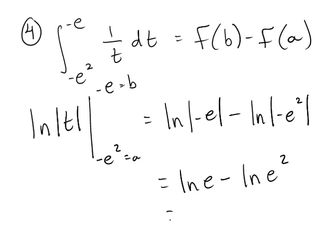But the ln of e is 1. And this, the power rule brings that 2 in front, so that's going to be 2 times the ln of e, but ln of e is 1. So this is 1 minus 2, which is negative 1.